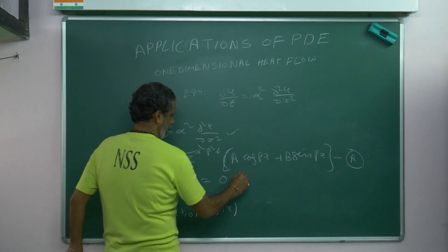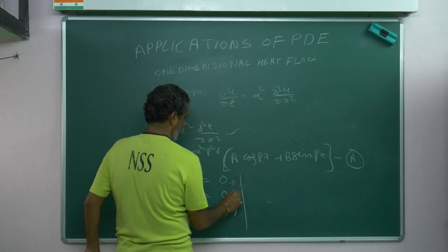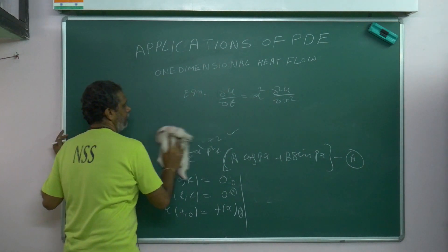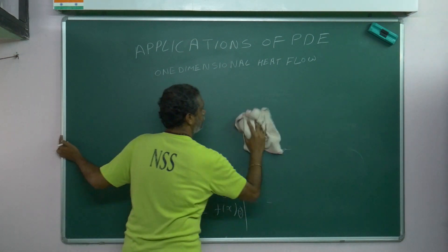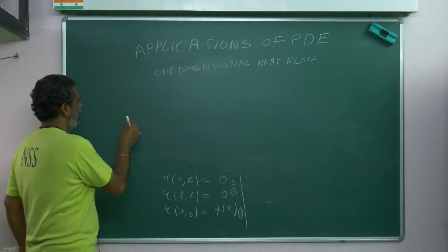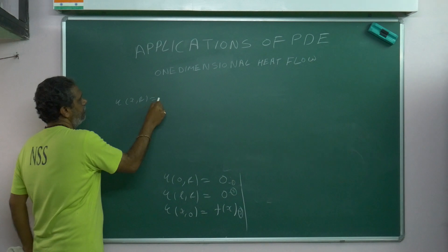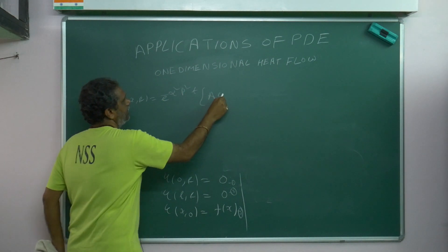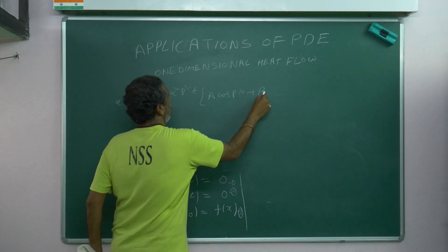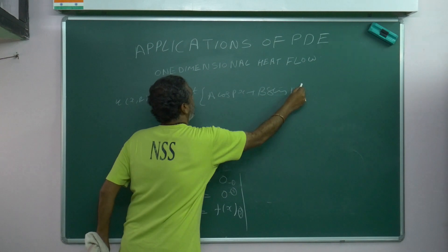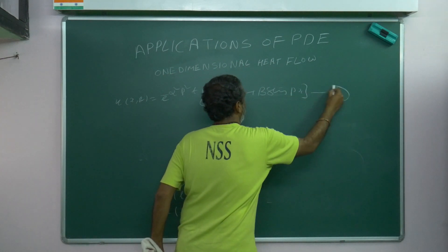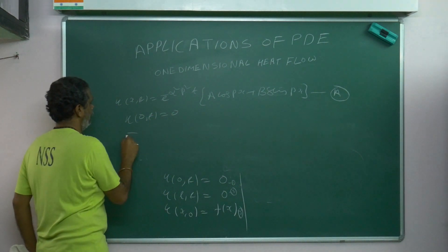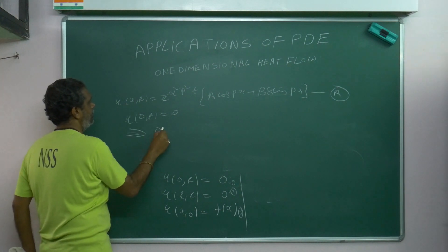Using the first condition: applying u(0, t) = 0 to the solution e^(−α²p²t) · [A cos(px) + B sin(px)] — put x = 0. The cosine term gives A, and the sine term vanishes. The exponential e^(−α²p²t) cannot be zero, as that would imply infinity — highly impossible. So the only chance is A = 0.